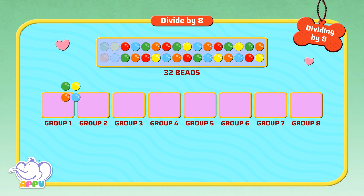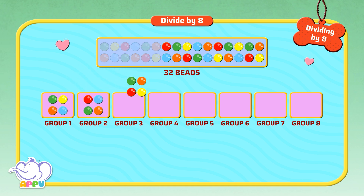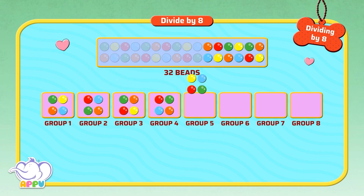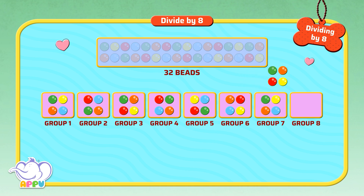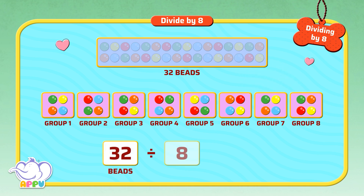So when we group 32 beads in 8 groups, we get 4 beads in each group. So we write 32 divided by 8 equals 4 beads in each group. Amazing!